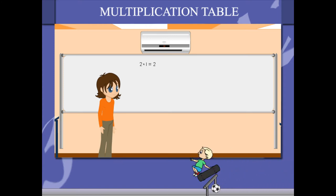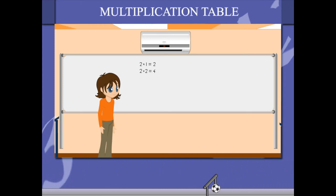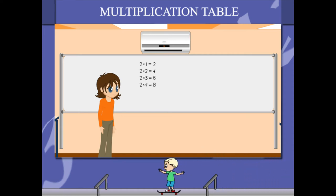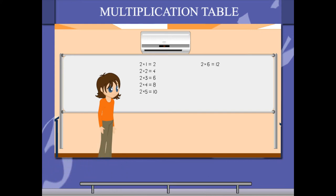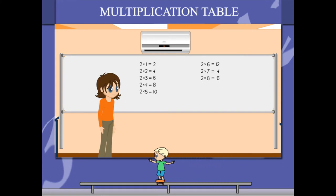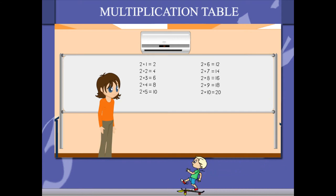2 1's are 2, 2 2's are 4, 2 3's are 6, 2 4's are 8, 2 5's are 10, 2 6's are 12, 2 7's are 14, 2 8's are 16, 2 9's are 18, 2 10's are 20.